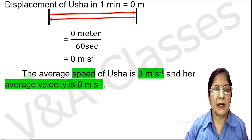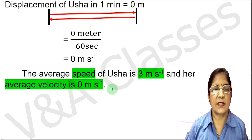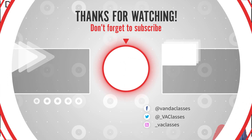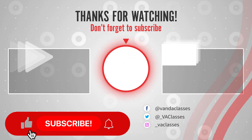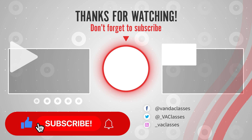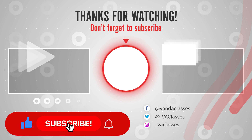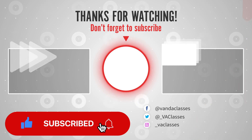So the average speed of Ursa is 3 meters per second and her average velocity is 0 meters per second. That's it. If you liked the video, please like and subscribe to our channel.